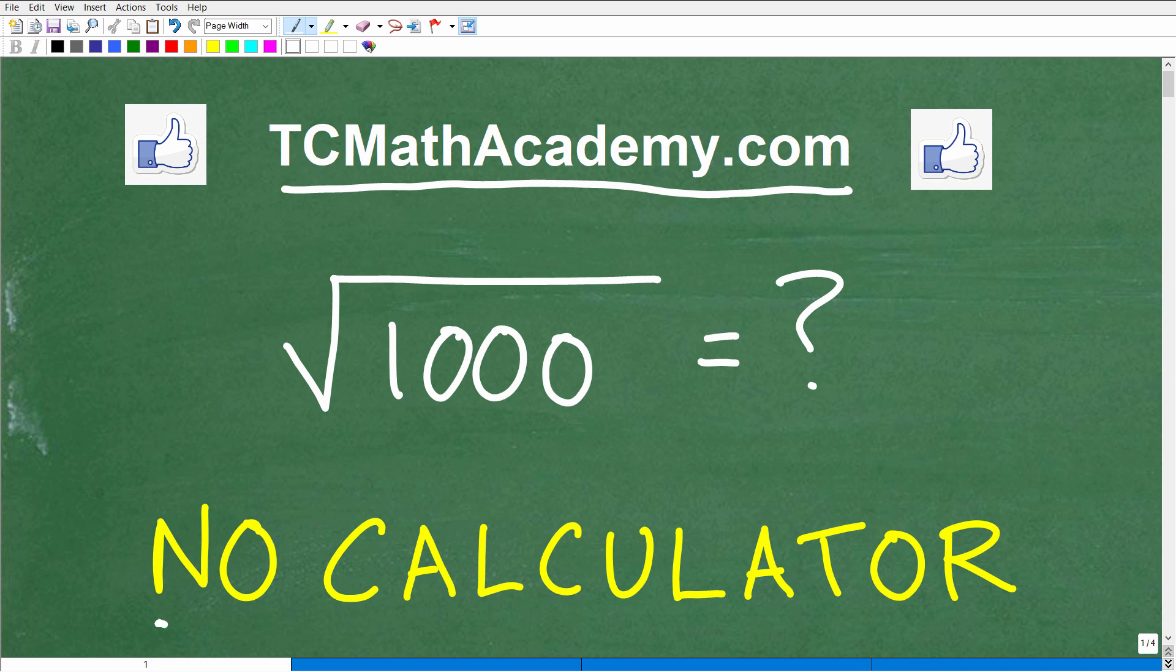And the best part of this problem is we're not going to use a calculator. So basically, I'm going to give you two answers to this problem in just one second. One answer is going to be an exact version or the exact, a simpler way to write the square root of 1,000 in an exact way. And then we're going to talk about an approximation to the square root of 1,000.